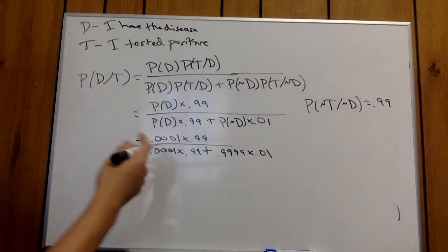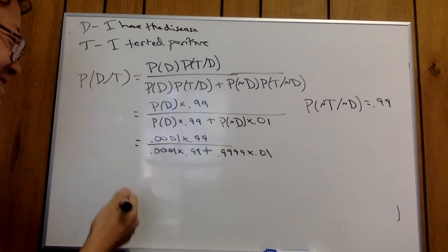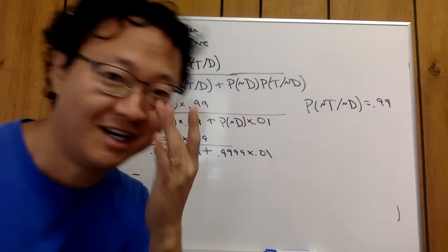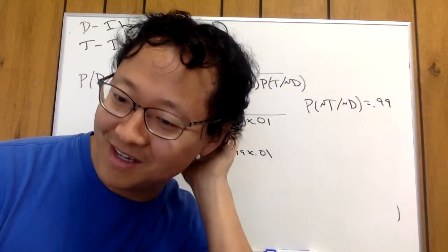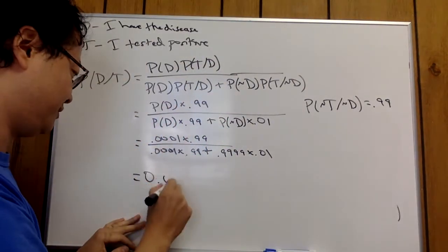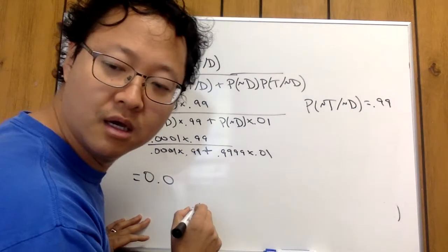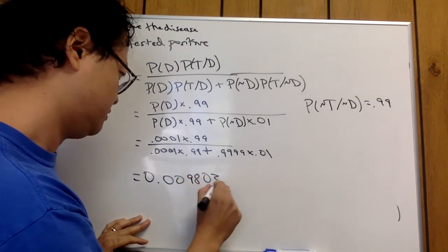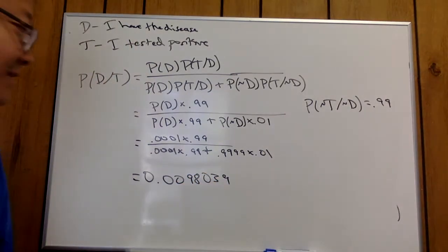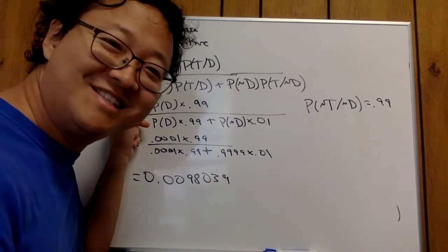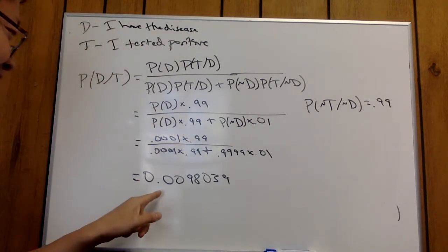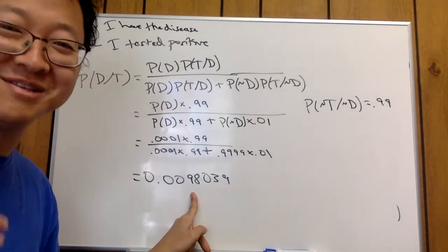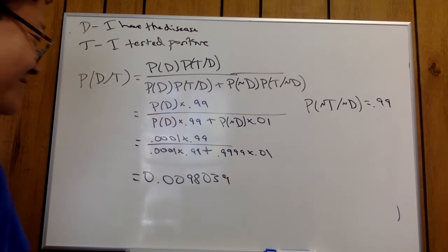You have to put this in a calculator, but I did it ahead of time: the answer is approximately 0.0098039. So the probability that you have the disease given that you tested positive is almost 1% — you have just about a 1 in 100 chance of having the disease.